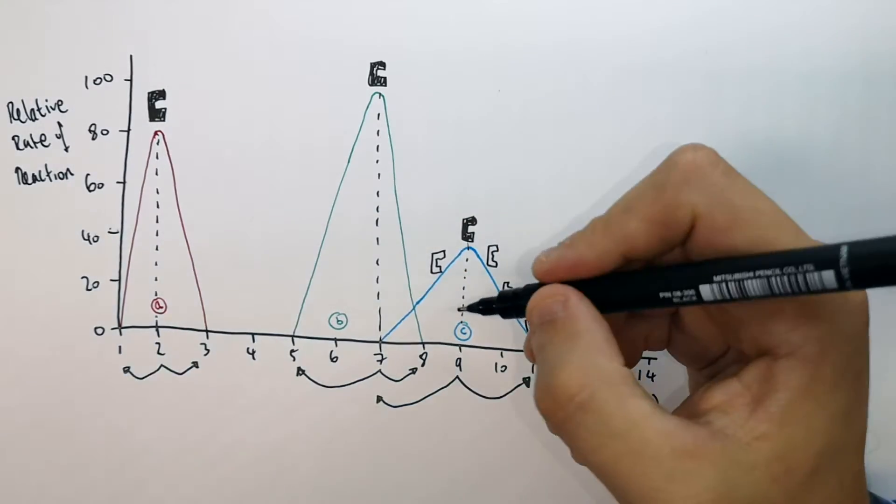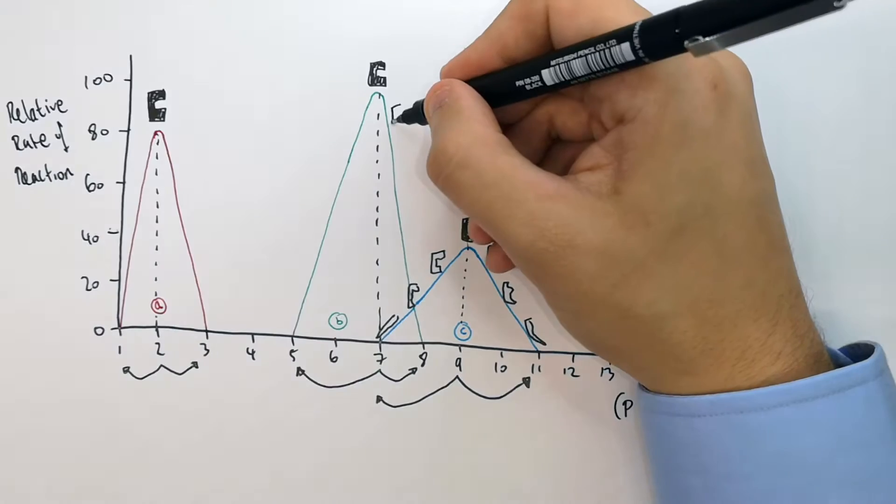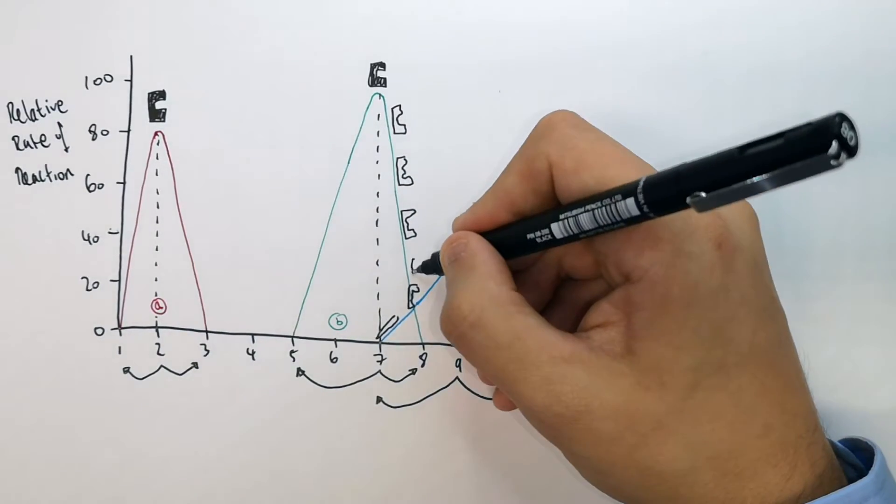So if you're below 9, the enzyme's active site denatures. Above pH 7, the active site is denaturing.